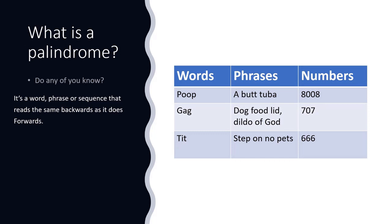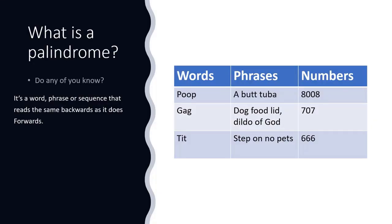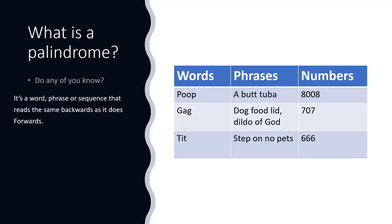How mental is that? Palindromes that are phrases: 'A bot tuber' — it's the same backwards as it is forwards. 'Dog food lid.' 'Dildo of God' — it's the same backwards as it is forwards. 'Step on. No pets' — it's the same backwards as it is forwards. That's crazy.